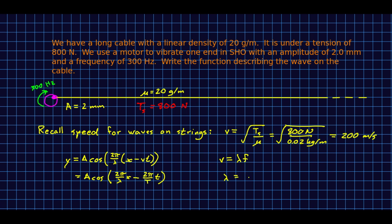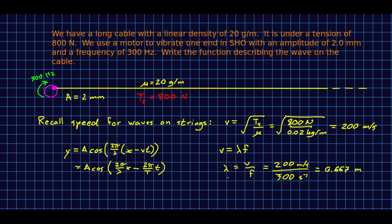Lambda then is going to be v over f, and so that is 200 meters per second over 300 hertz, which is seconds to the negative one or one per second. So that's two-thirds, so that's 0.667-ish meters. And that's all we need.